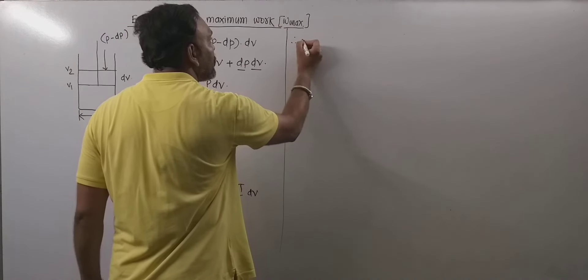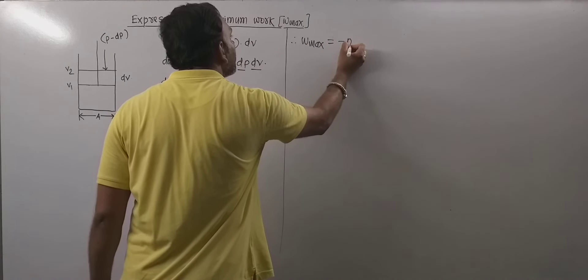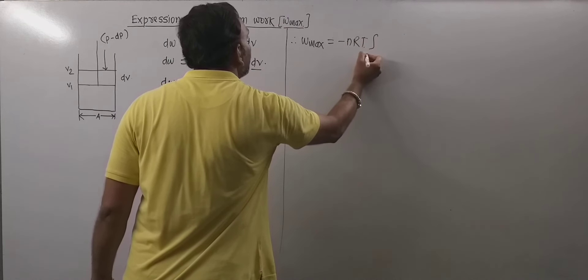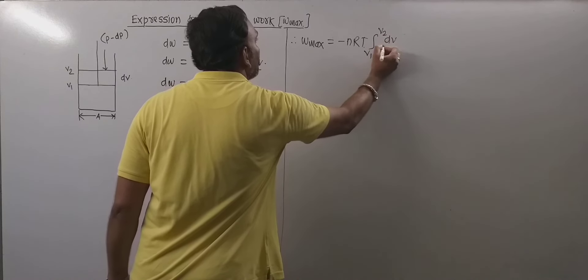Thus this can be given as w_max equals minus nRT integration between limits v1 to v2 dV by V.